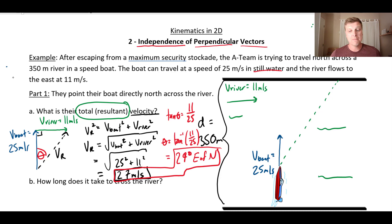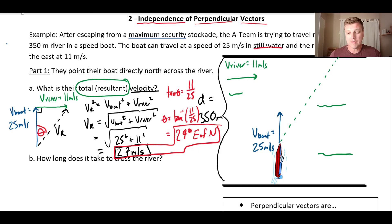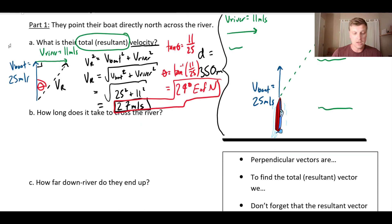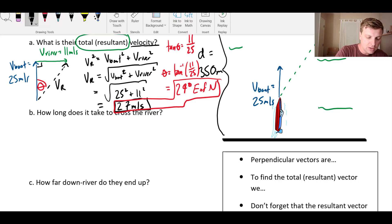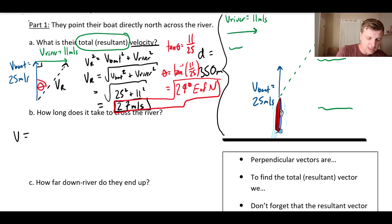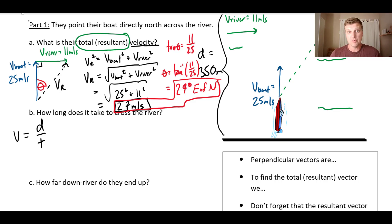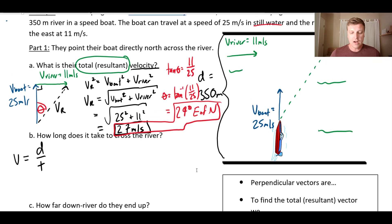Part two asks: how long does it take to cross the river? The boat's traveling at constant velocity, so I can use velocity equals displacement over time. But it's not obvious which velocity to use — I've got the velocity of the boat, the velocity of the river, and the total resultant velocity.